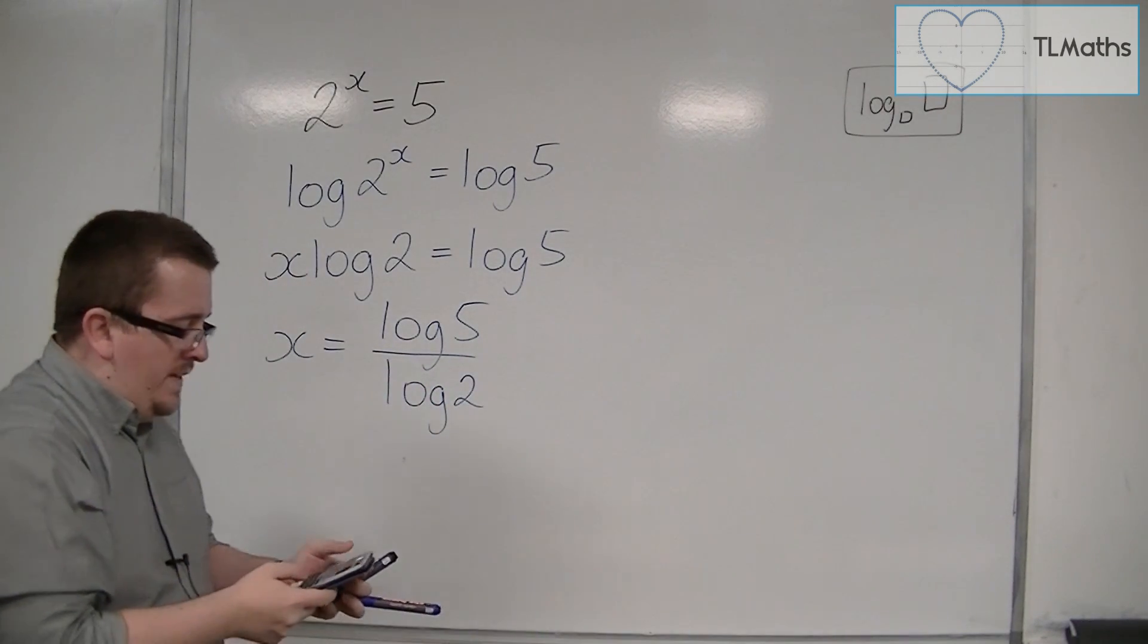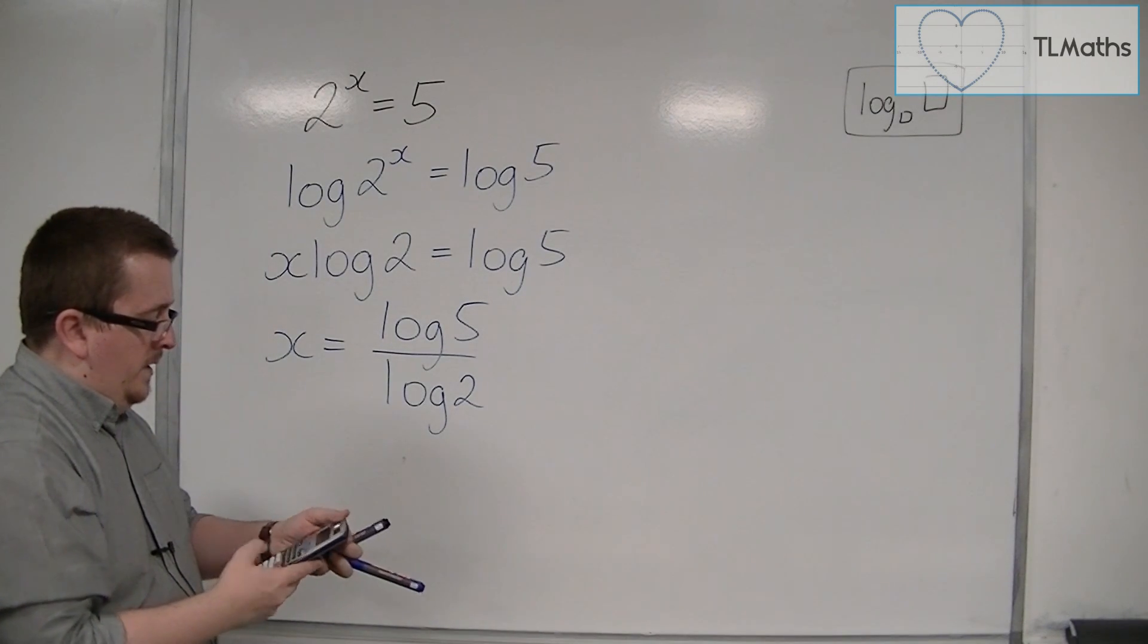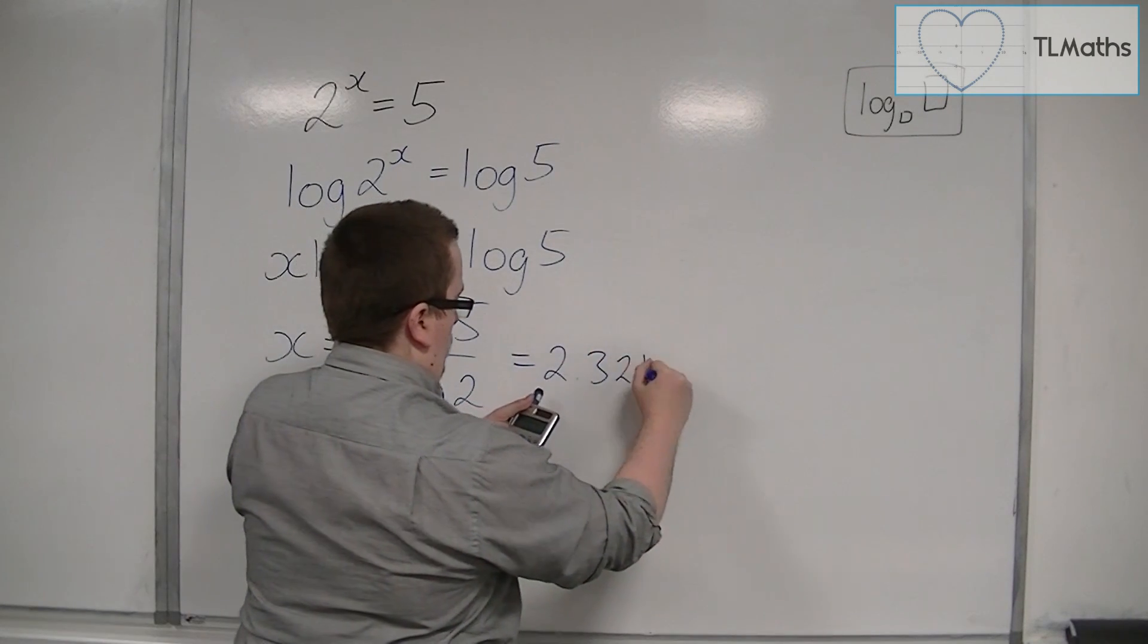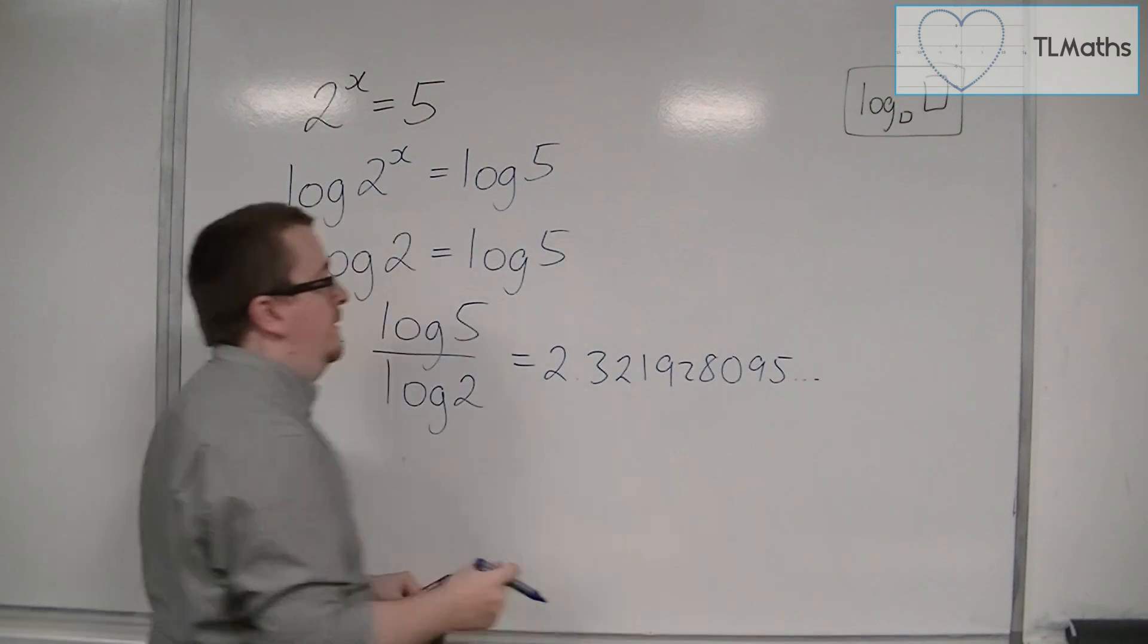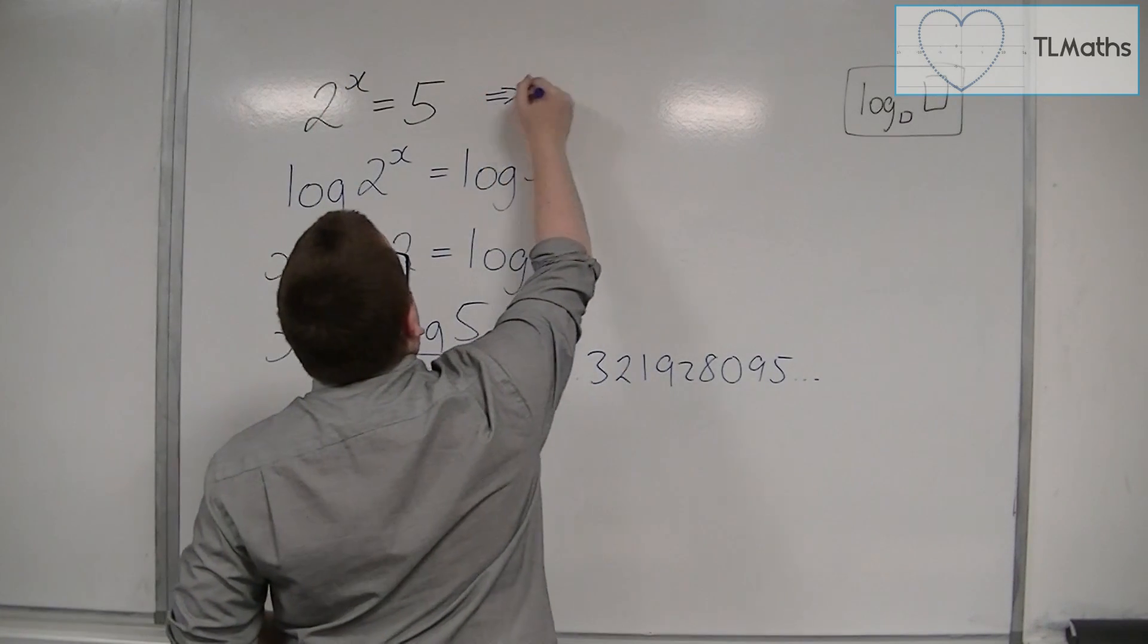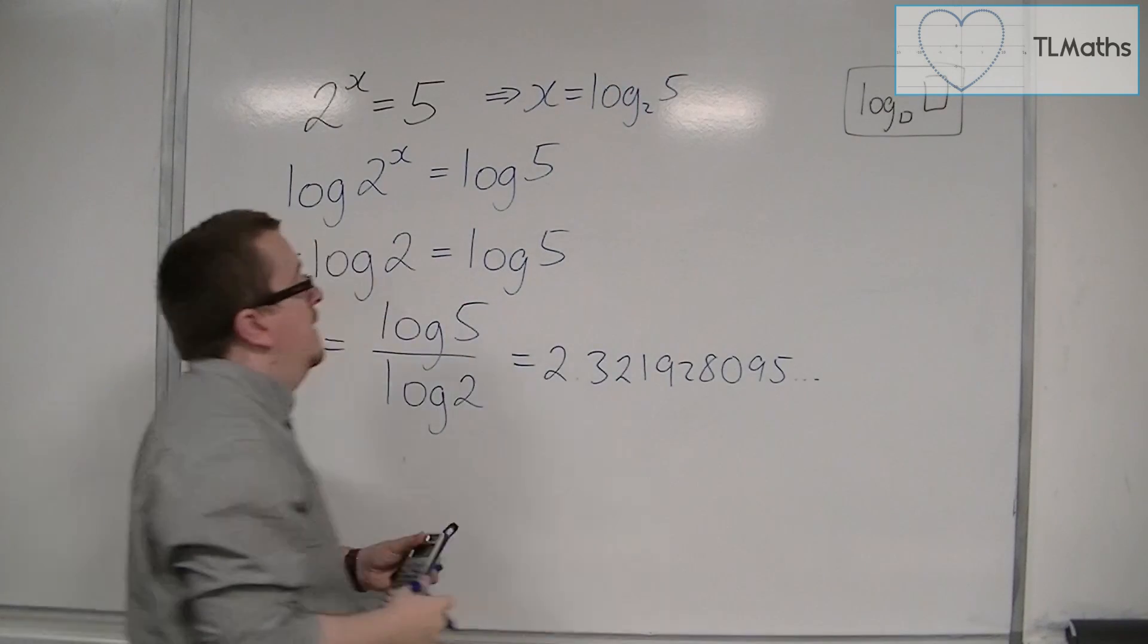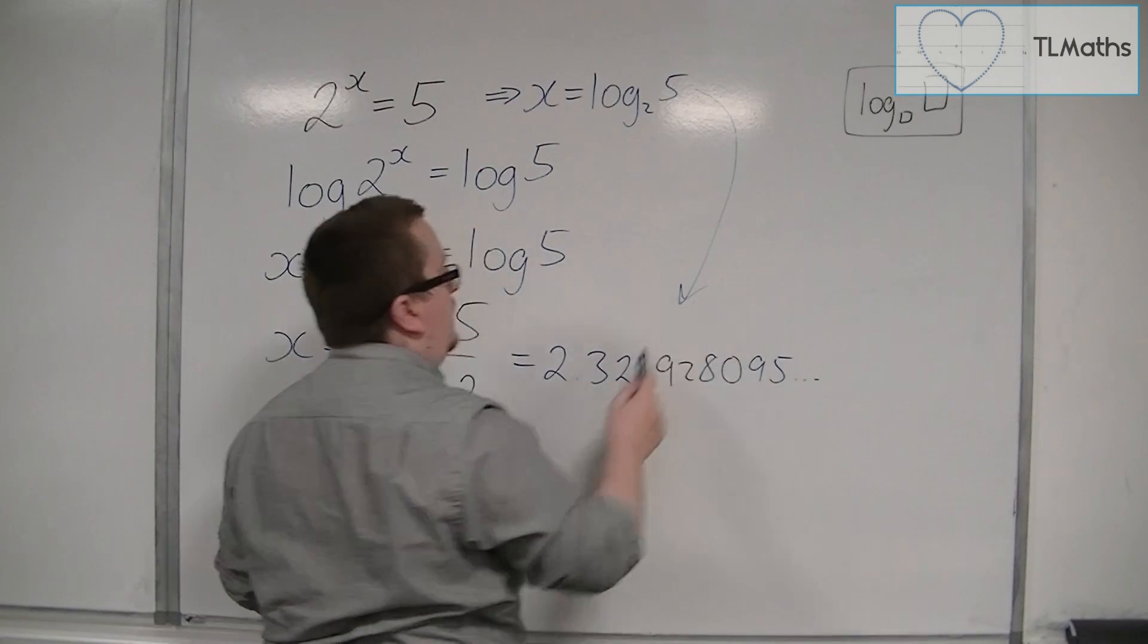Now, if we try that on the calculator, log of 5 divided by log of 2, we get 2.321928095 and that keeps going. If we did the logarithmic form and wrote it as x equals log base 2 of 5, that will give you exactly the same answer as this.